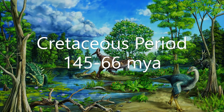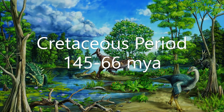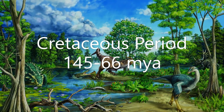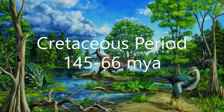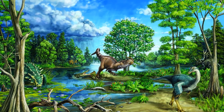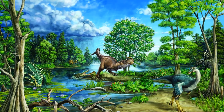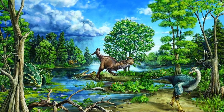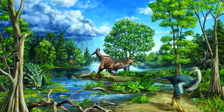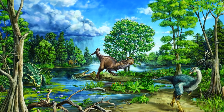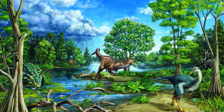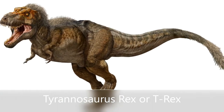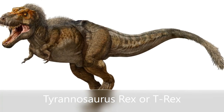Finally, we have the Cretaceous Period, occurring from 145 to 66 million years ago. Many of the famous dinosaurs were living in this time, like the Velociraptors, Spinosaurus, Titanosaurus, Mosasaurus, and Triceratops — and this guy, whatever he is.